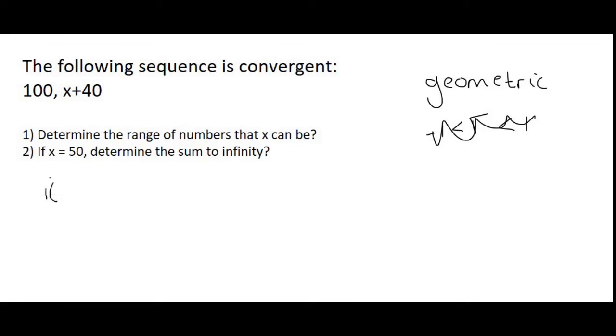If x is 60, no let's say 70 for example, then your sequence would look like this. Your first term would be 100 and your second term would be 70 plus 40 which is 110.